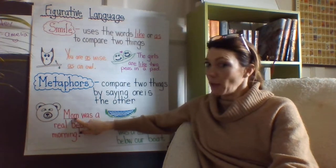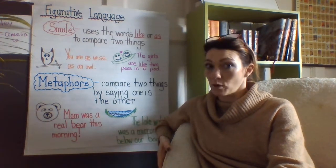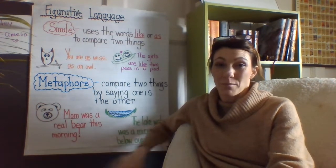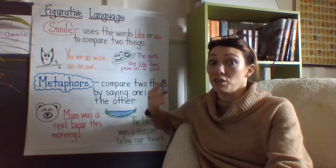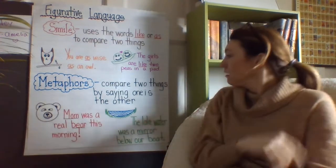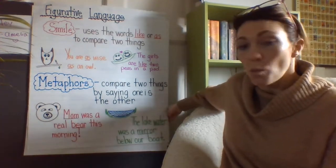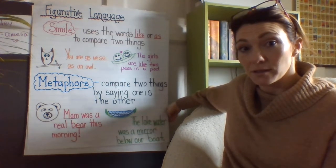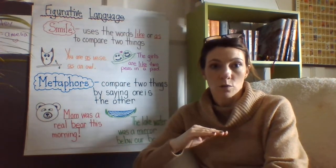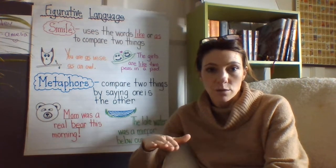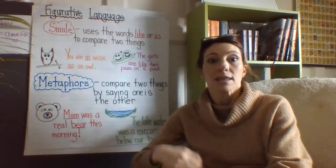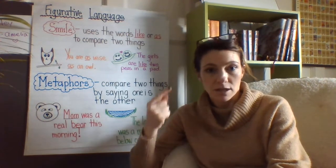An example of a metaphor: 'Mom was a real bear this morning.' That means mom was super grumpy or mean this morning. Describing it like a bear helps you visualize the way the mom woke up — not just a little upset, but grumpy. Another example: 'The lake water was a mirror below our boat.' You can picture sitting on the lake, the water so still that you could see your reflection clearly, without even ripples interrupting it. That's a great way of describing a lake — it puts that picture in your mind.